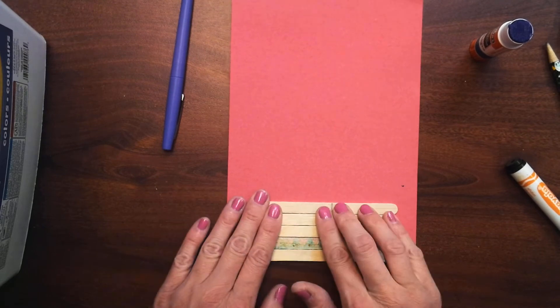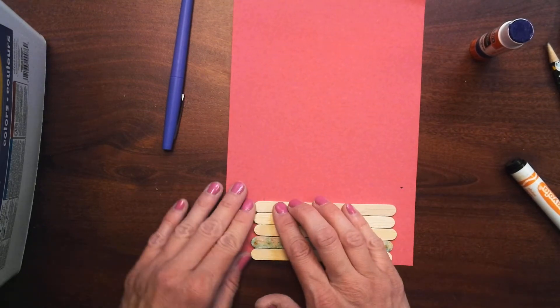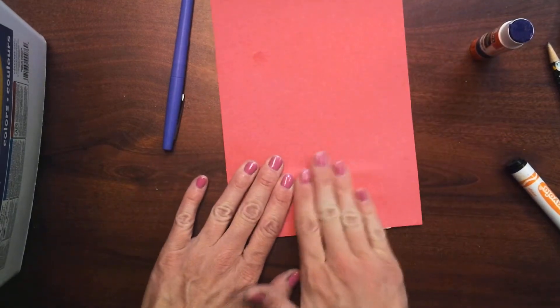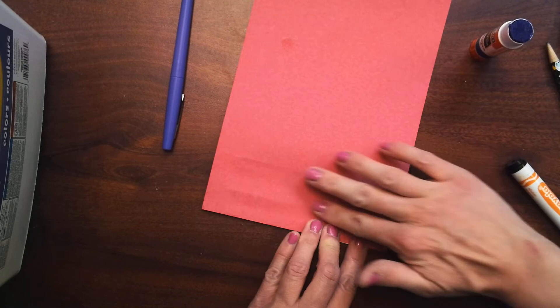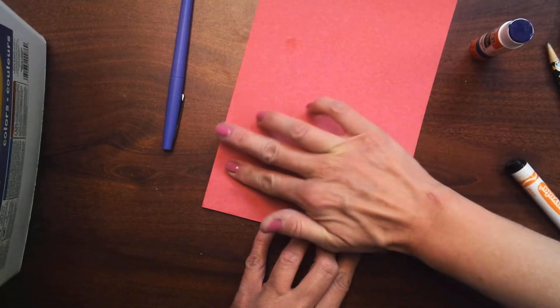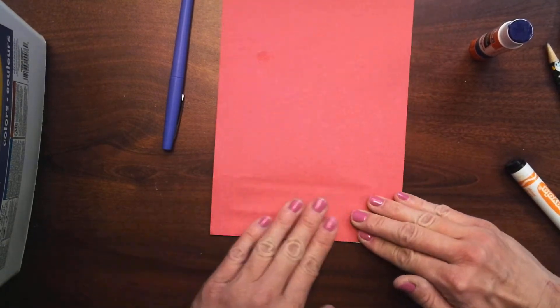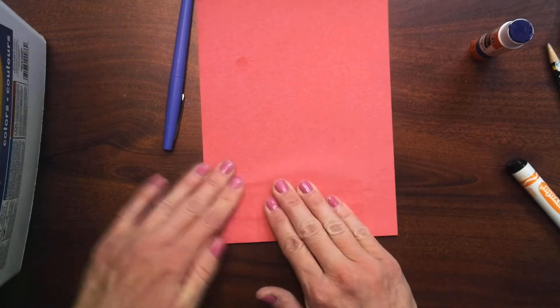Okay, so I put glue on all of the back of all of my sticks. Now I'm going to turn my paper over and rub the paper. You can see that you can kind of see my sticks through it. I'm going to rub the paper. That's going to make sure that my sticks stick really well to my paper.